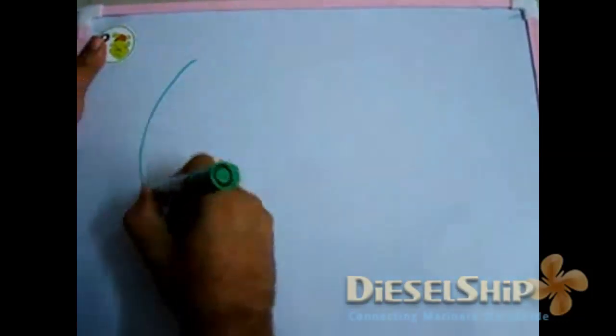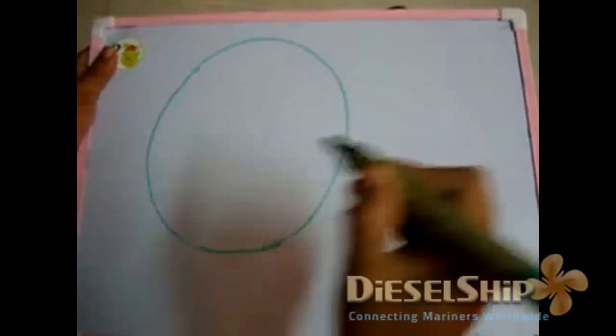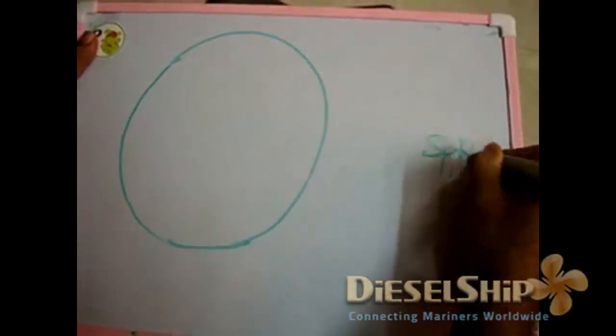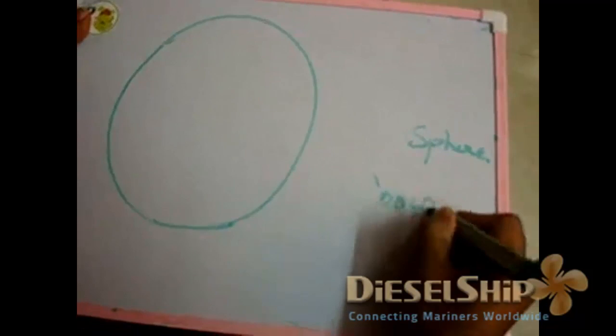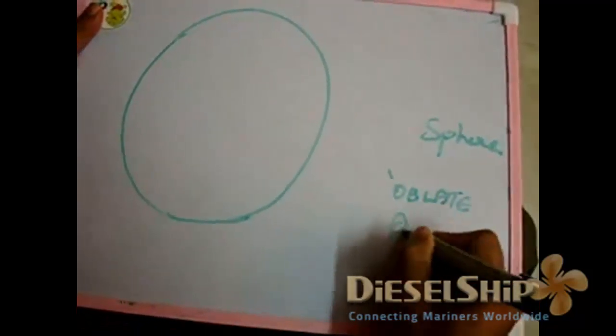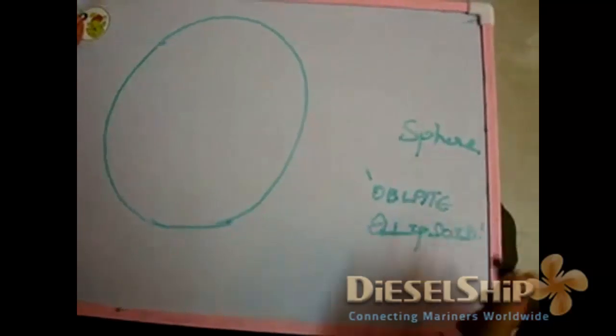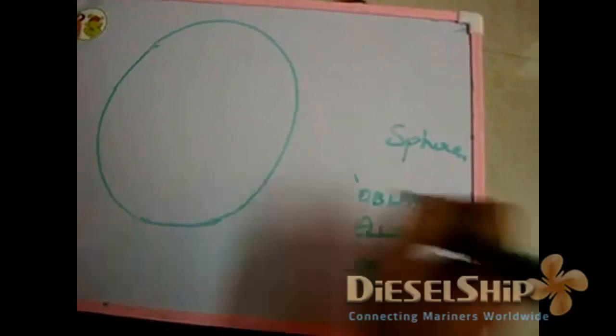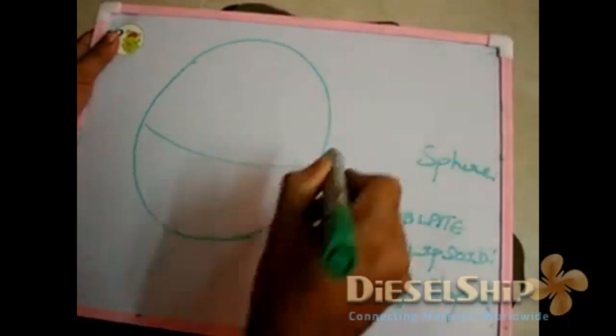Now let us assume Earth. And remember we all say that the shape of the Earth is sphere. But exactly we can say it as it is oblate ellipsoid, which means approximately it is egg-shaped. And now we have a zero degree equator over here.